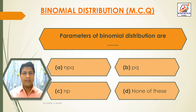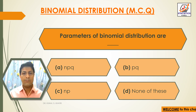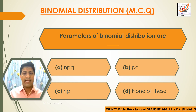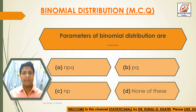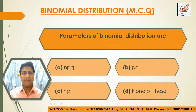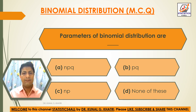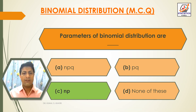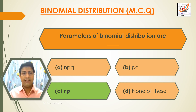Next question: Parameters of binomial distribution are dash. Option A: npq. Option B: pq. Option C: np. Option D: None of these. The answer is option C — np. Parameters of binomial distribution are n and p.